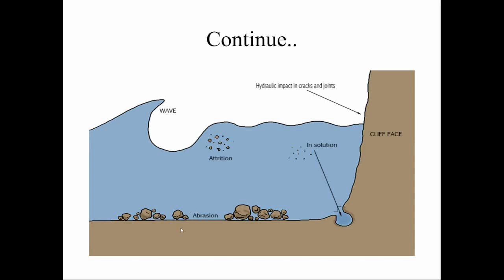The grinding of rock exposures is known as abrasion. Attrition is the lifting of particles into the air, where they grind against each other and produce finer particles. Hydraulic action impacts cracks and joints in the sea cliff when waves hit the rock cliffs. Solution erosion occurs where limestone or carbonate rock is present — this cavity is formed by the dissolving action of sea water on carbonate material.